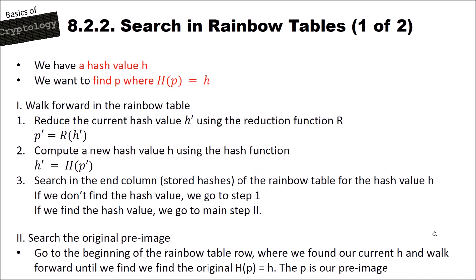Now let's search for a pre-image in the rainbow table. We assume the rainbow table is already created and we want to attack a password. We have a hash value h and we want to find the pre-image p where h(p) equals that hash value. In the first main step, we walk forward in the rainbow table: we reduce the current hash value h using reduction function r to compute a new pre-image p', then compute a new hash value h' = h(p'). We repeat this again and again, with the first h being our target hash value.